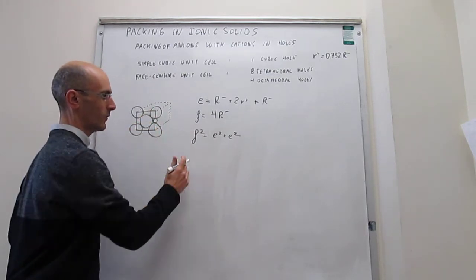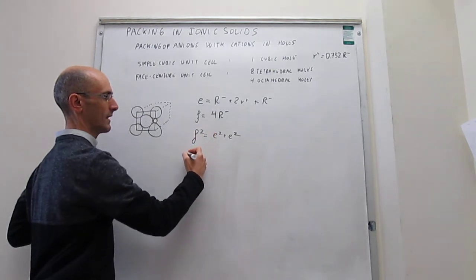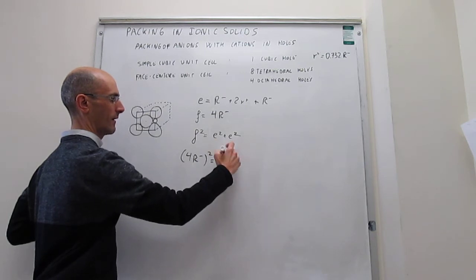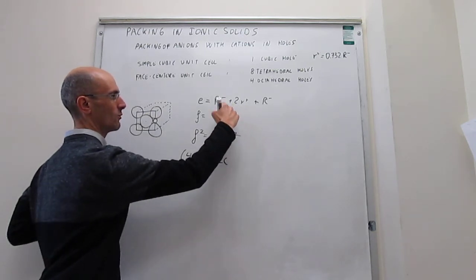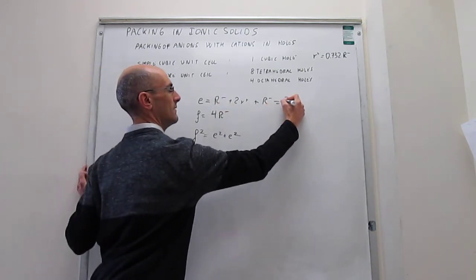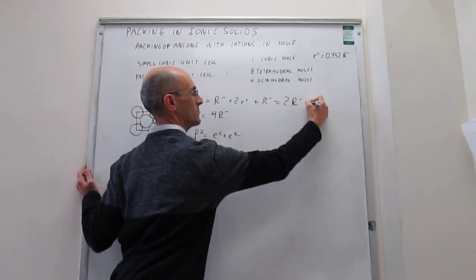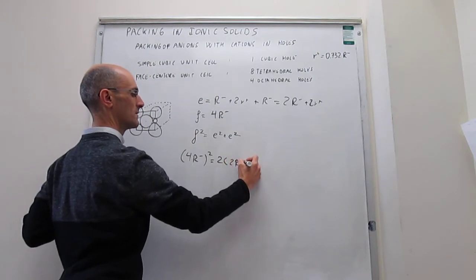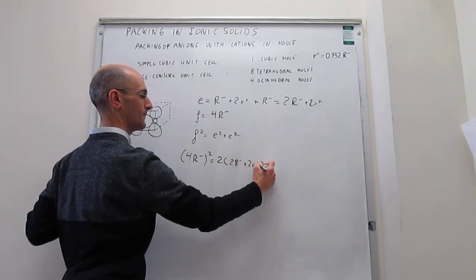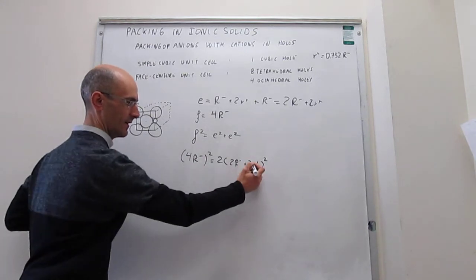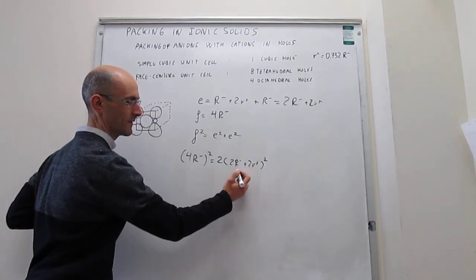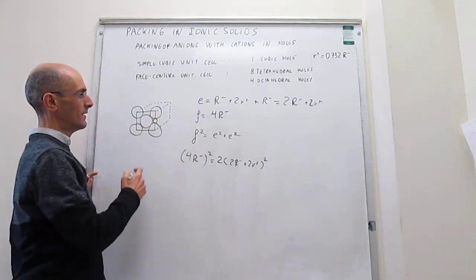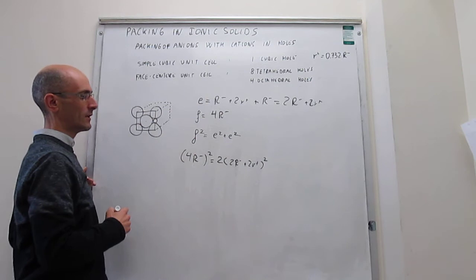So then we can easily solve for this. Notice that F² there is going to be 4R-², and then here we have 2E², so it will be 2 times that. But this is equal to 2R- plus 2R+. So 2 times (2R- + 2R+)². Solving here for R+ as a function of R- will give us the limiting cationic radius that fits perfectly into that octahedral hole.